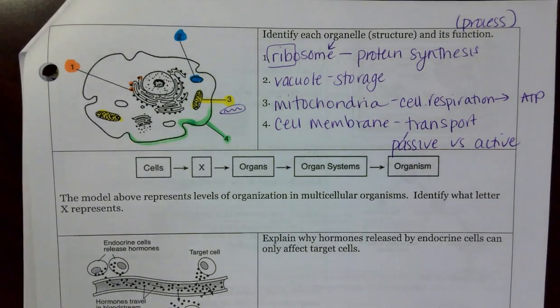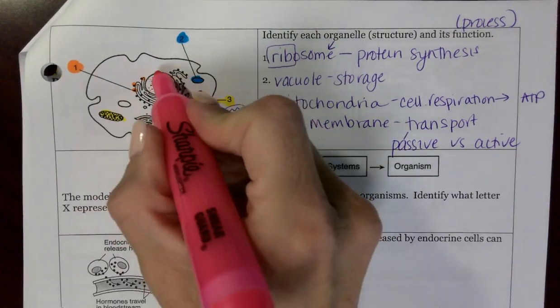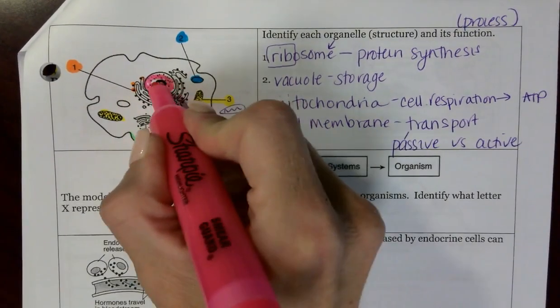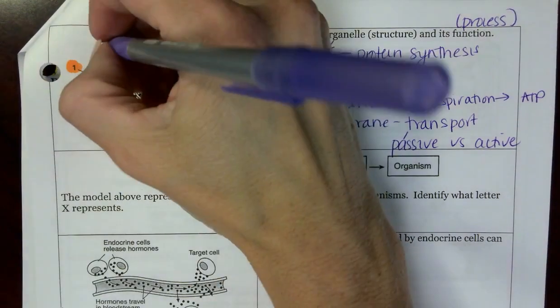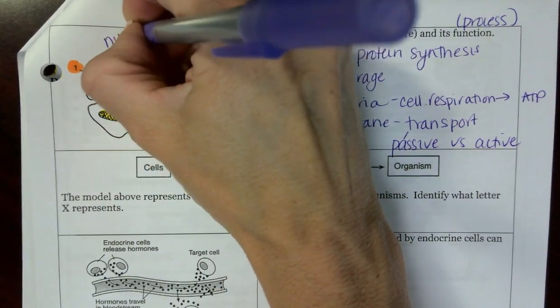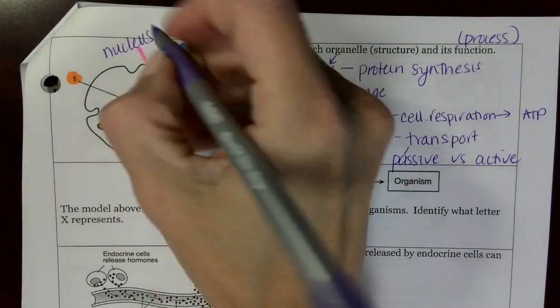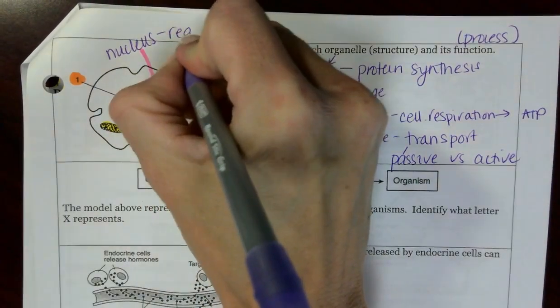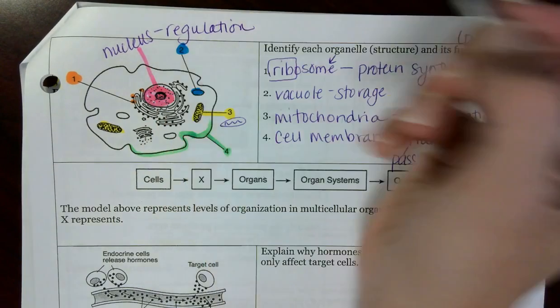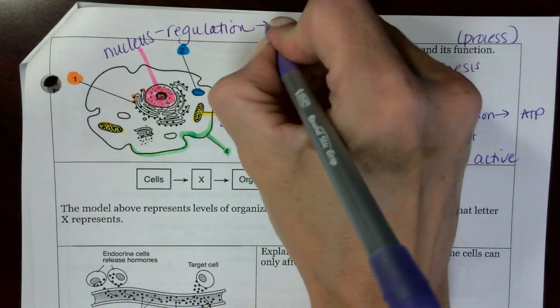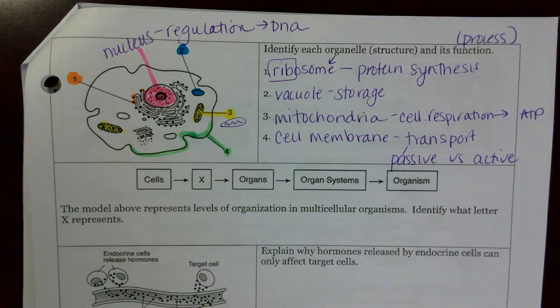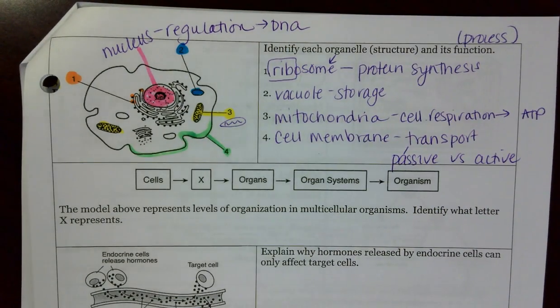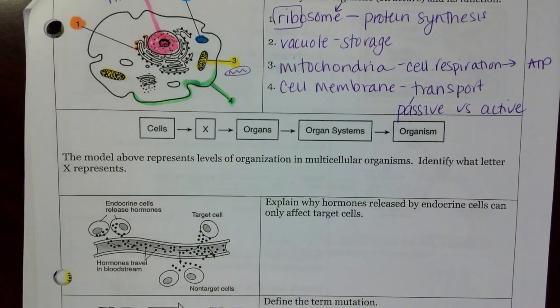There is one other organelle, even though it's not highlighted, I think it's just good to review. That guy there, that's going to be my nucleus. The nucleus is in charge of regulation. That's one of those life processes. And also keep in mind, this is going to be where my DNA is. So it's more or less like the brain of the cell.